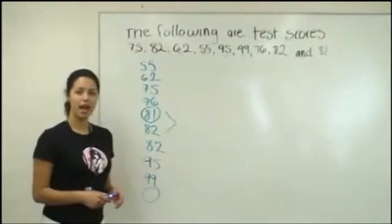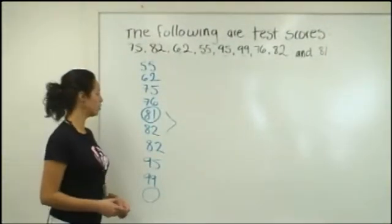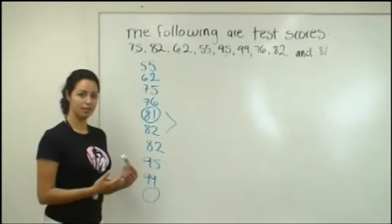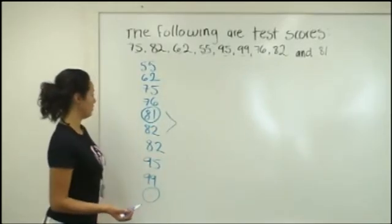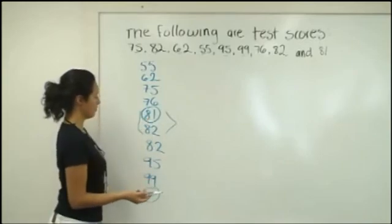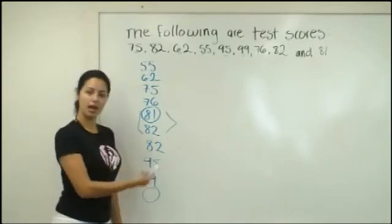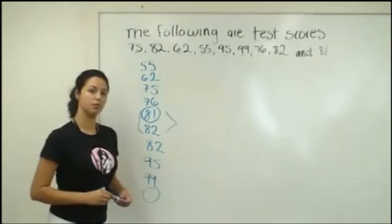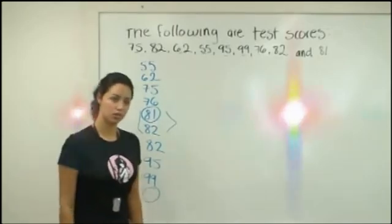Just in case we have an even amount of test scores, what we will do to find the median is sum the two middle values, and then divide by two — and that will be our median. Thank you.